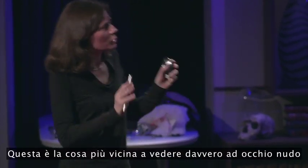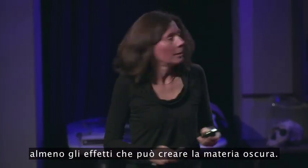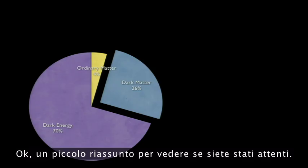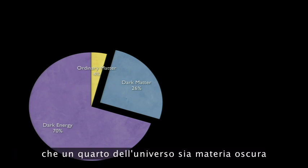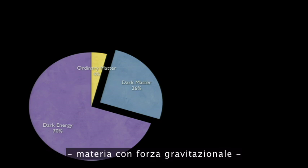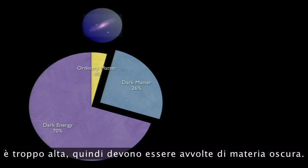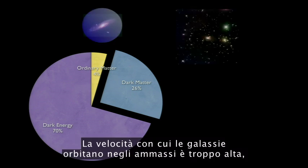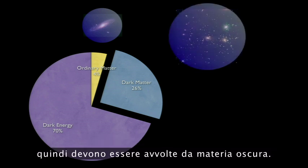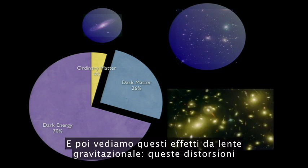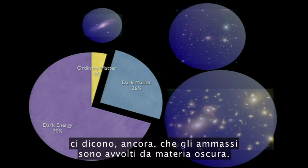This is the closest you can get to seeing the effects of dark matter with your naked eye. So a quick review: the evidence that a quarter of the universe is dark matter — this gravitationally attracting stuff — is that the speeds with which stars orbit in galaxies is much too large, so galaxies must be embedded in dark matter; the speed with which galaxies within clusters are orbiting is much too large; and we see these gravitational lensing effects and distortions showing that clusters are embedded in dark matter.